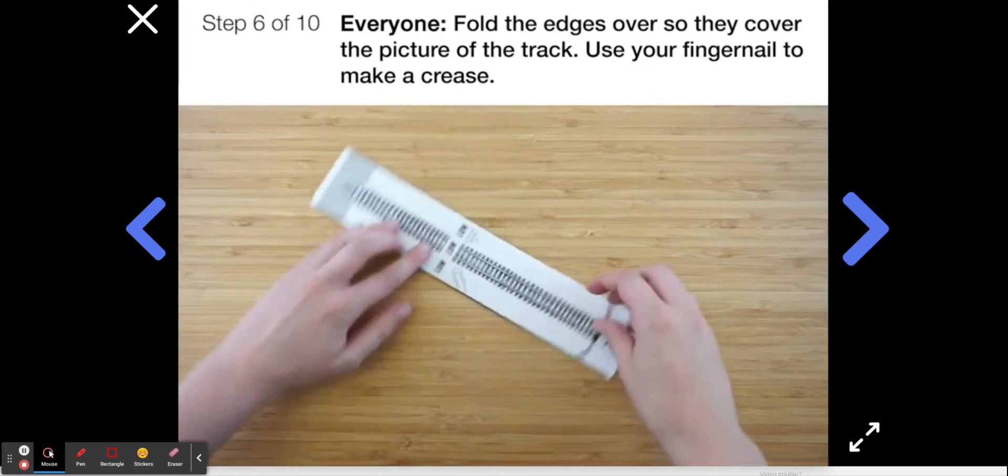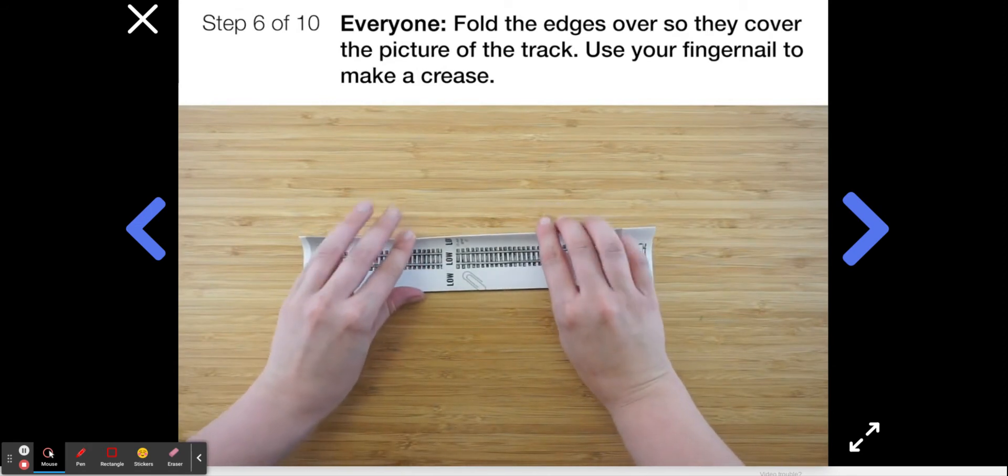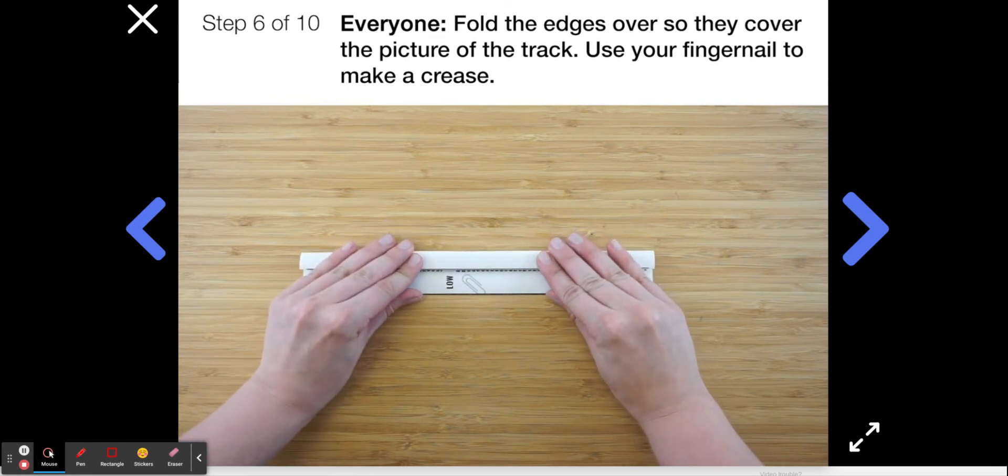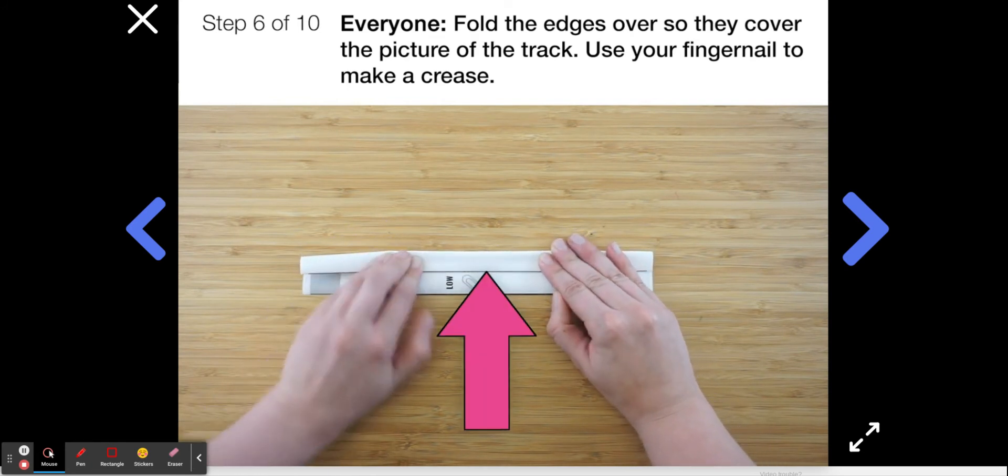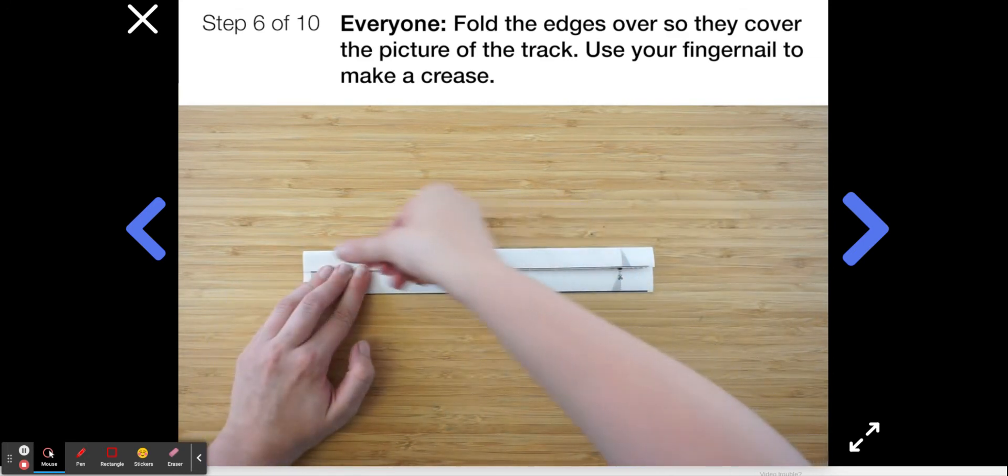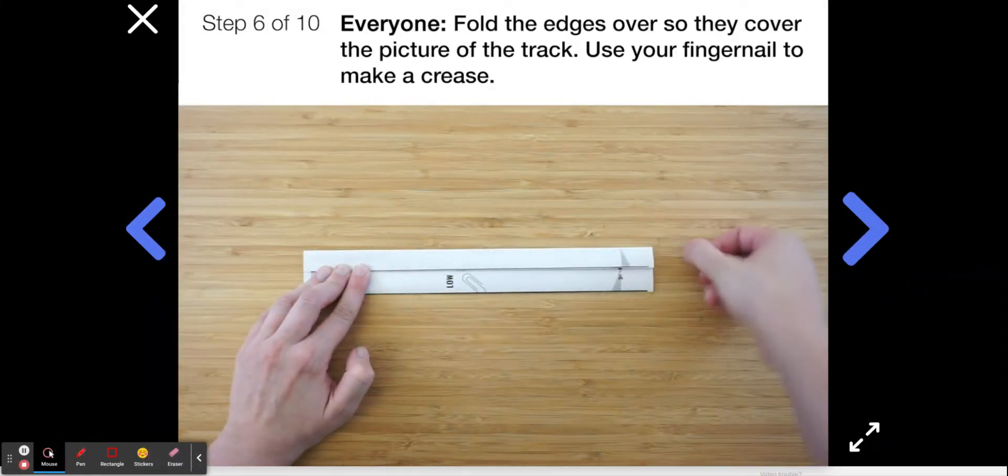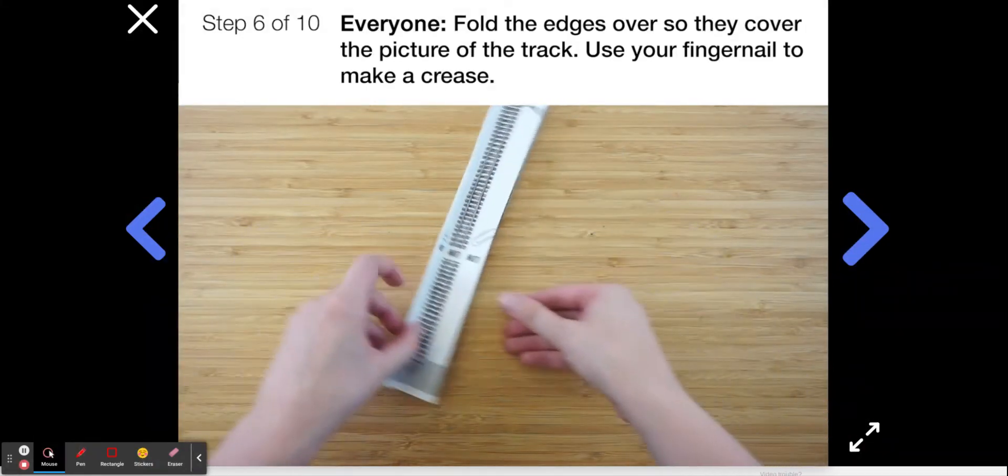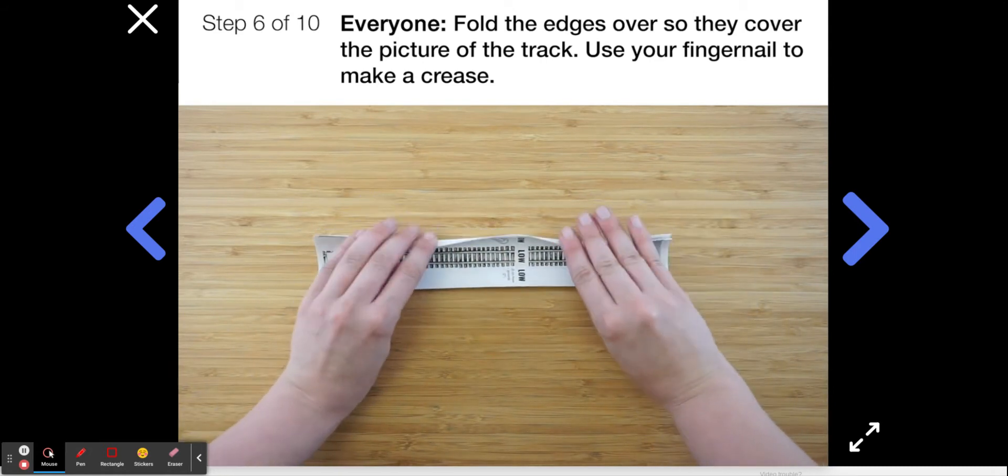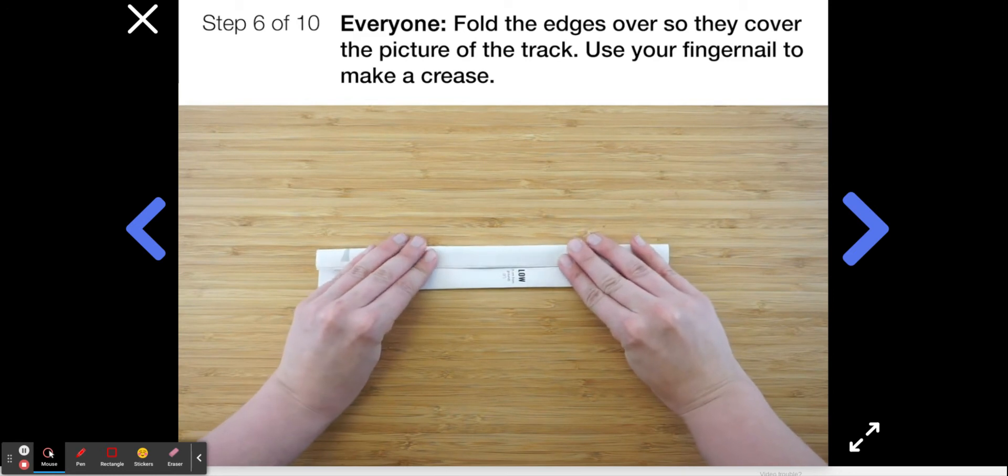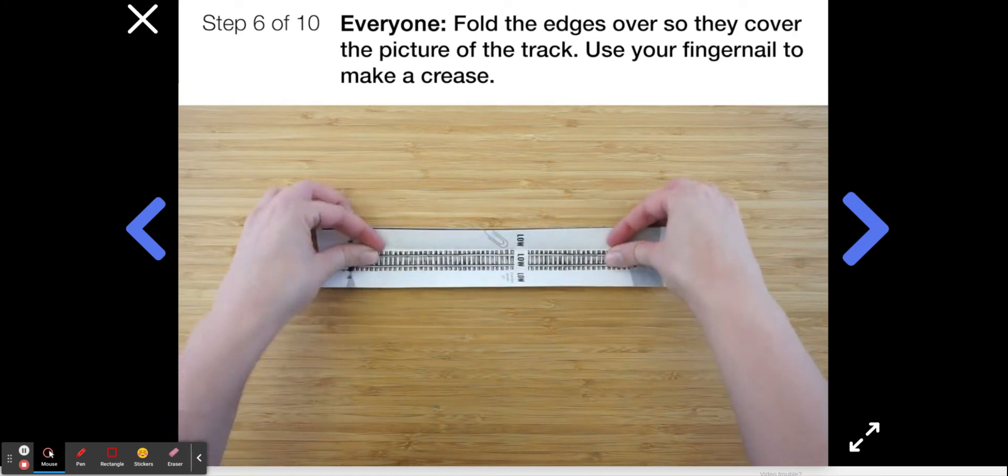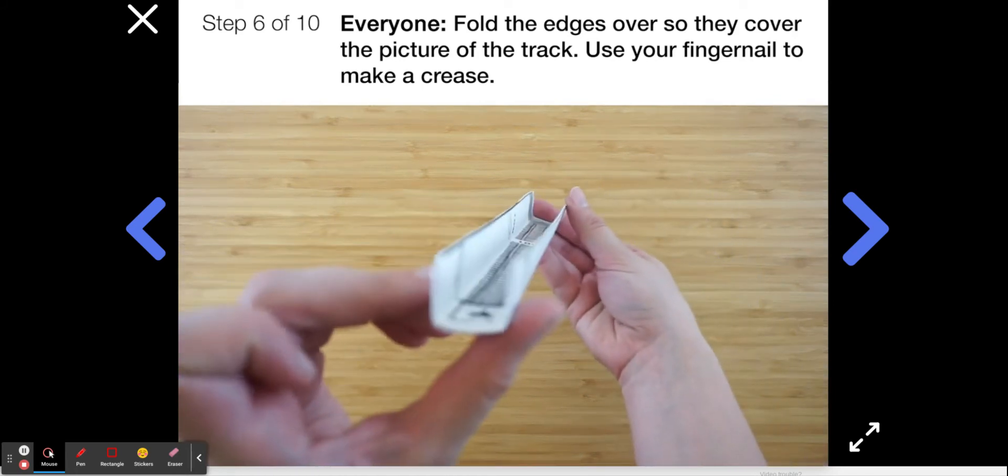Okay, now to create the sides of your tracks. You're going to want to fold each side so that it just barely covers the image of the track, like you see here. You'll press down and use your fingernail to make a really good crease. Notice that the track should be pretty stiff at this point, so you might have to press down hard. Then repeat this on the other side, like this. When you're all done, it should look like a U-shape, like this.